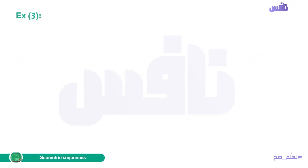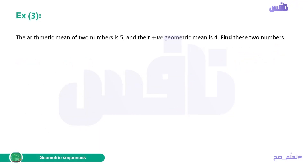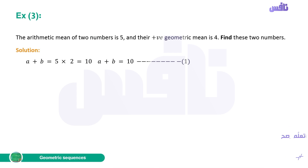Example 3 (means): the arithmetic mean of two numbers is 5.5 and their positive geometric mean is 4. Find the two numbers. Arithmetic mean: A+B = 2×5.5 = 11, so A+B=11. Geometric mean: √(AB)=4, so AB=16. These give us two equations.